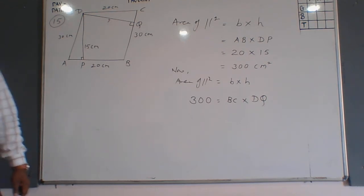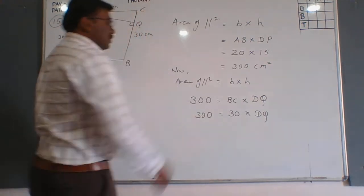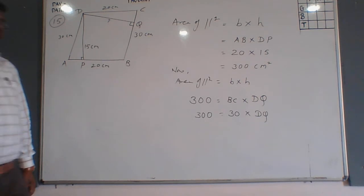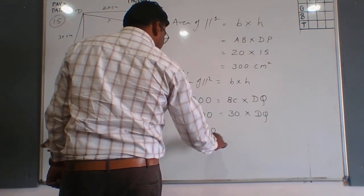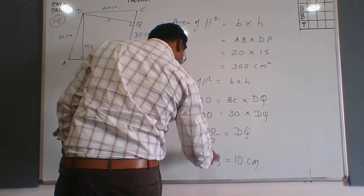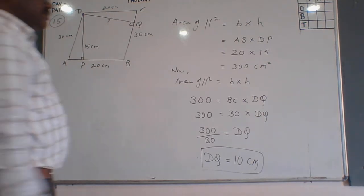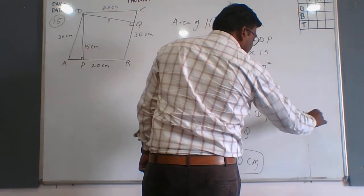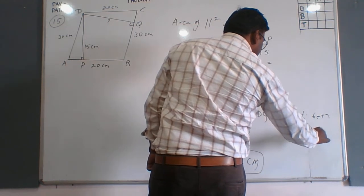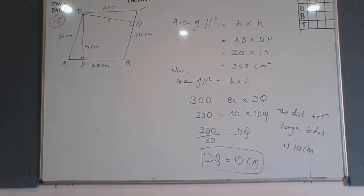BC is 30 cm and we want to calculate the length of DQ. Since 30 is in multiplication, shifting it to the other side gives division: 300 divided by 30 equals 10. Therefore DQ is 10 centimetres. The distance between the longer sides is 10 centimetres. Please note it down in your notebooks.